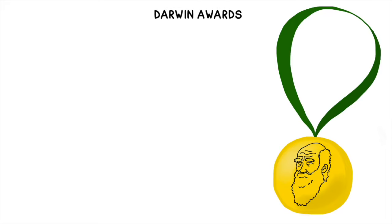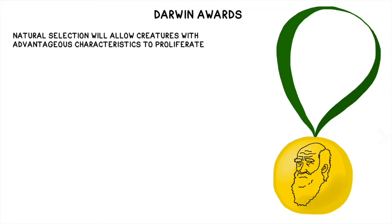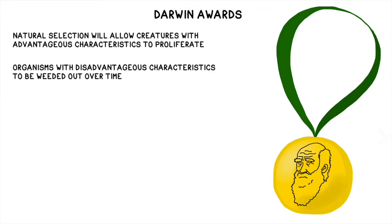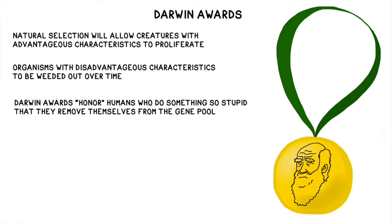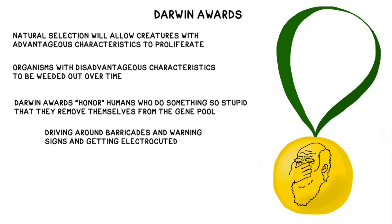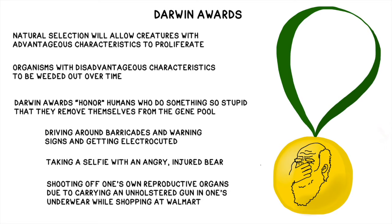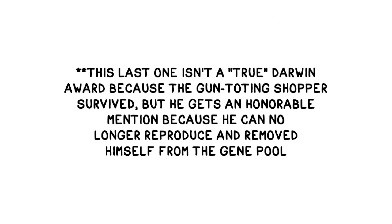As a wrap-up, let's quickly explore the concept of Darwin Awards. In theory, natural selection will allow creatures with advantageous characteristics to proliferate and those with disadvantageous characteristics to be weeded out over time. Darwin Awards are not real awards for achievement — they're meant as a joke. These prizes are given out annually to honor humans who do something so incredibly stupid that they remove themselves from the gene pool and, supposedly, improve the human species in the process. Here are some favorites from the last two years: Number one, after a snowstorm, a man tried to drive around barricades and warning signs onto live wires and died via electrocution. Number two, a person tried to take a selfie with an injured and very angry bear. And number three, a man accidentally shot off his own reproductive organs while carrying an unholstered loaded gun in his underwear while shopping at Walmart. Even though he didn't die in the process and it's not a true Darwin Award, he removed his ability to reproduce, therefore removing himself from the gene pool.